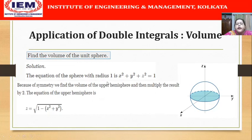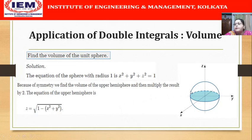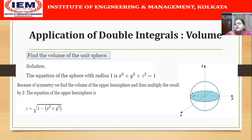Because of symmetry, we will find the volume of the upper hemisphere and then multiply the result by 2. The equation of the upper hemisphere is z = √(1 - x² - y²). The base region is the circle x² + y² = 1 on the xy plane (obtained by setting z = 0). Since the base region is a circle, it is convenient to use polar coordinates: x = r cosθ and y = r sinθ.